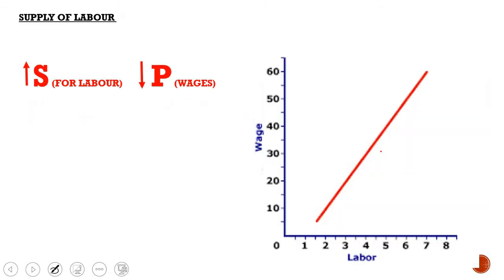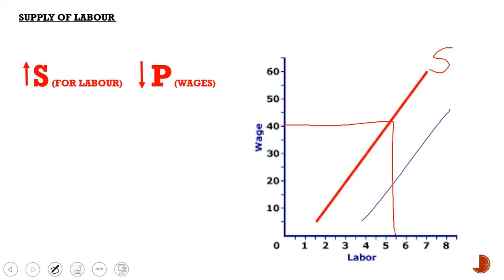If supply increases, your wage is going to decrease. This has to do with the shift of your curve. If 40 is your original wage and 5.5 is your original labor quantity, and you have an increase in your supply, your supply curve shifts downward, which indicates an increase in supply — that will be S1. So you have a decrease in your wage and an increase in your quantity of labor supply.